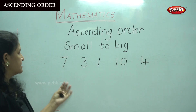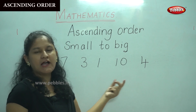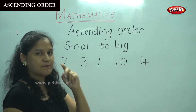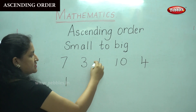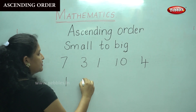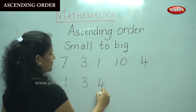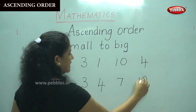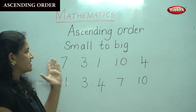So now I have the numbers 7, 3, 1, 10, and 4. I am going to place these numbers in ascending order, that is from the smallest number to the biggest number. The first smallest number is 1. The next smallest number is 3. Then we have 4. Then we have 7, and the biggest number is 10. So we have placed these numbers according to the order, from the smallest to the biggest.